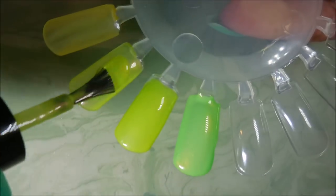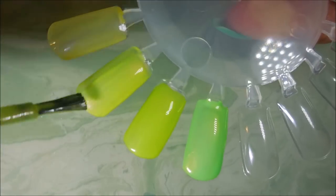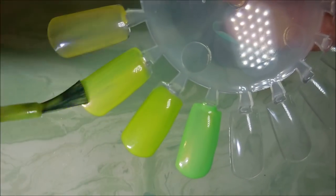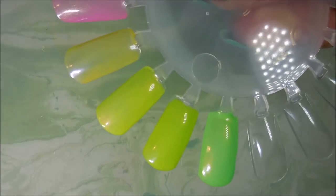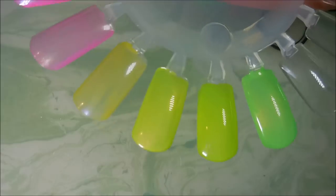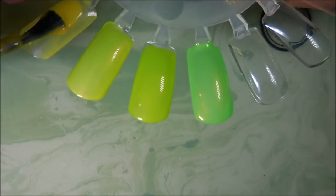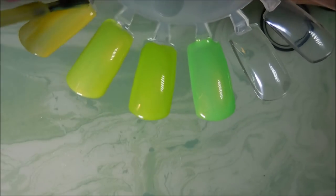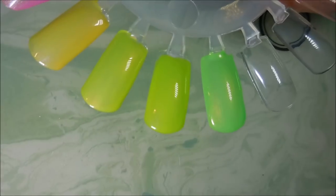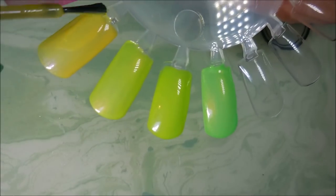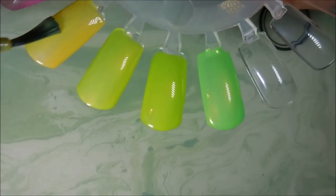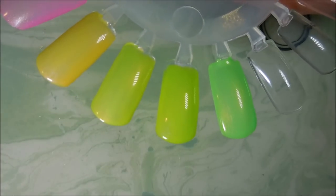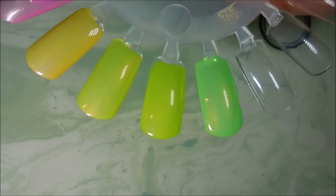And then we have Drops of Sunshine and it's just a yellow pastel neon with red shimmer in it. Very nice. They are building up as you can see. And then we have Orange Dreamsicle, the one that started this and it's an orange pastel neon with violet shimmer in it. And, you know, you throw some shimmer in it and this girl's all over that.